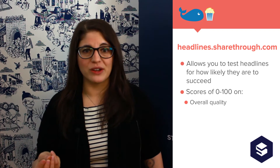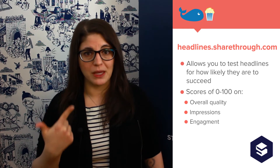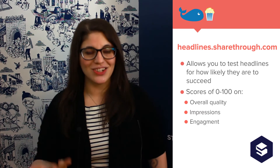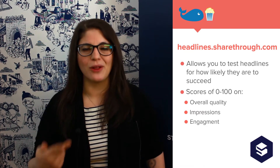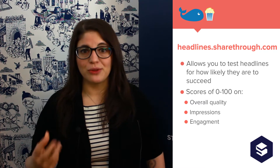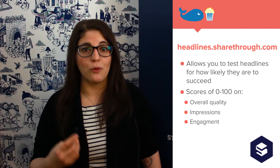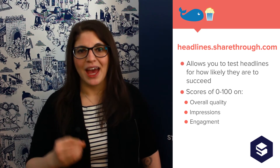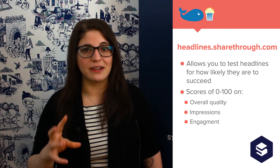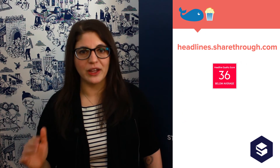Sharethrough gives us three scores. There's an overall quality score, there is a score for impressions — which is basically the number of people who will be seeing your ad — and there's also a score for engagement, the likelihood that those people are going to engage with your ad or your content based on that headline. These scores are set on a scale of 0 to 100, with 100 obviously being the best, and are broken down further into a color-coded system: red is a danger zone, yellow is average, and green is high quality.